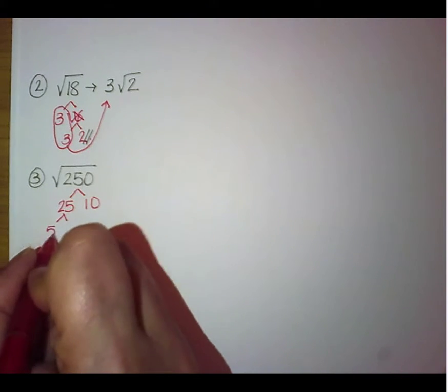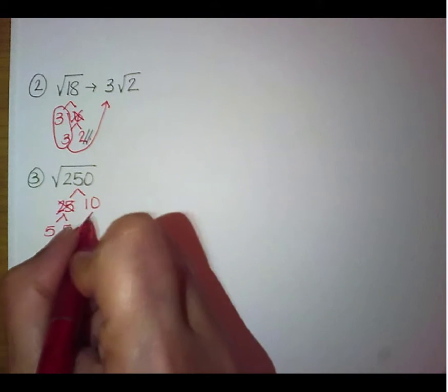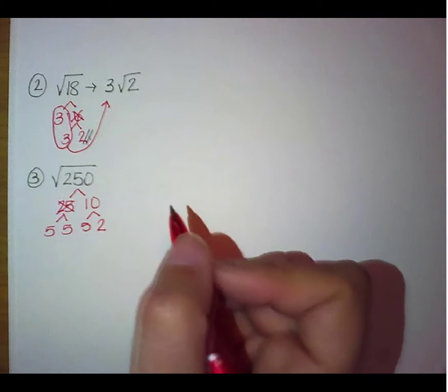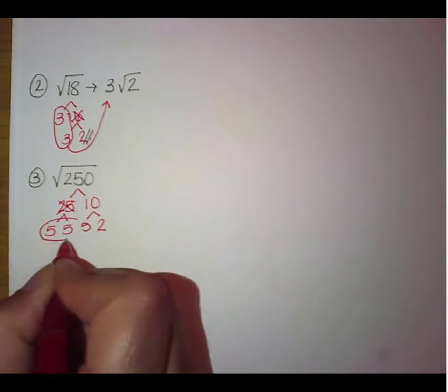25 is 5 times 5. Again, I'm going to cross that 25 out because I don't want to talk about him anymore. And 10 is 5 times 2. So as you can see, we have a pair, just one pair of 5s.